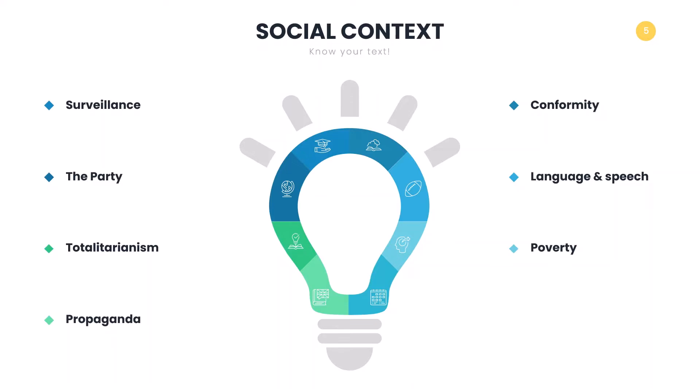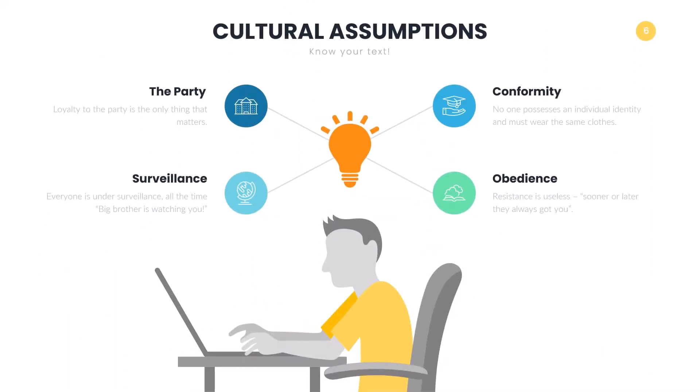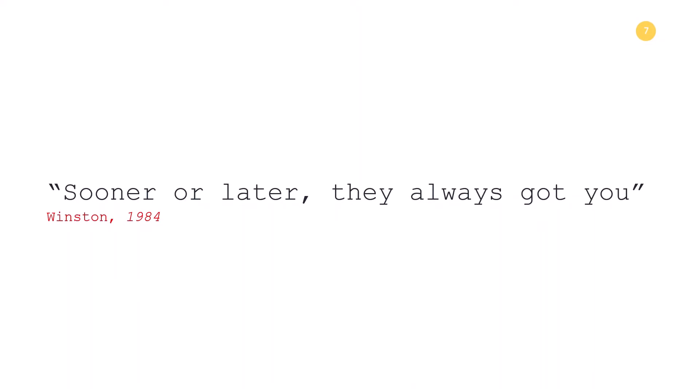We can examine the text on a deeper level by looking at the internal machinations of a society and its cultural assumptions or cultural attitudes. Cultural assumptions and attitudes are beliefs that are widely held so that they are considered part of the very fabric of society itself. Cultural assumptions that underpin 1984 are that everyone is under constant surveillance, that loyalty to the party is the only thing that matters, anyone who breaks the law will be tortured and die, that no one possesses an individual identity, and that there is no point in resistance. As Winston fatalistically comments, 'sooner or later, they always got you.'